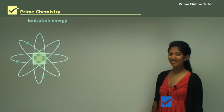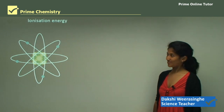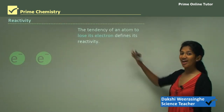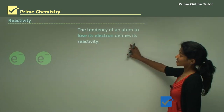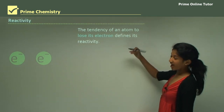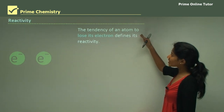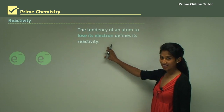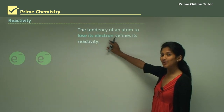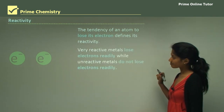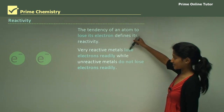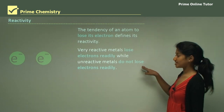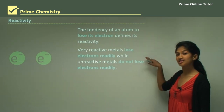Hello everyone, today we will be learning about ionization energy. Reactivity and ionization have something in common — ionization is the tendency of an atom to lose its electron, defining its reactivity. Very reactive metals lose electrons readily, while unreactive metals do not lose their electrons readily.